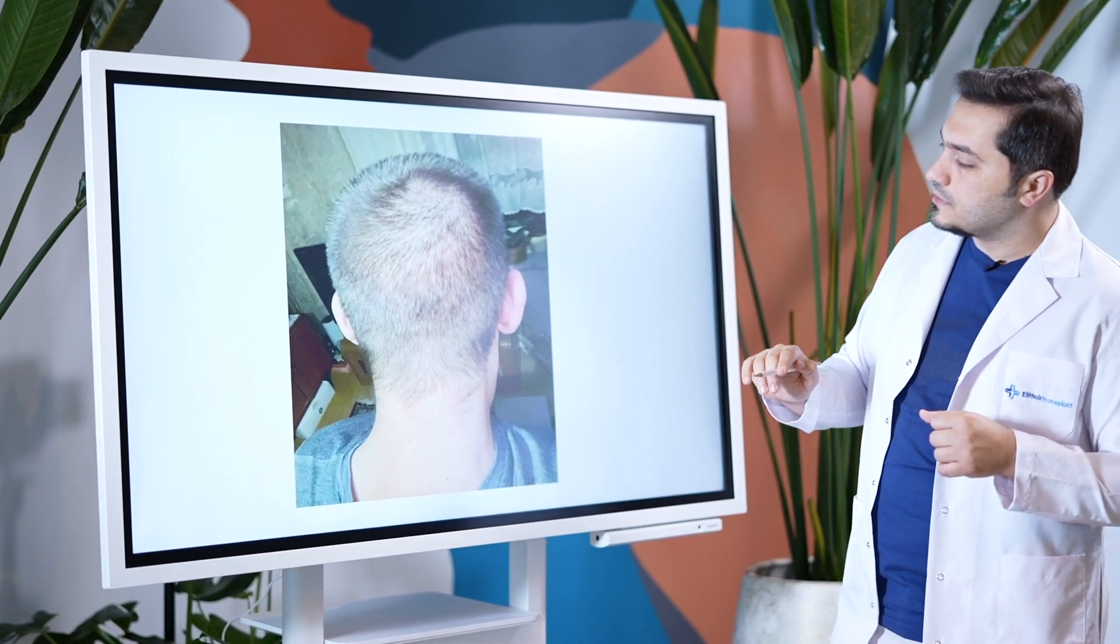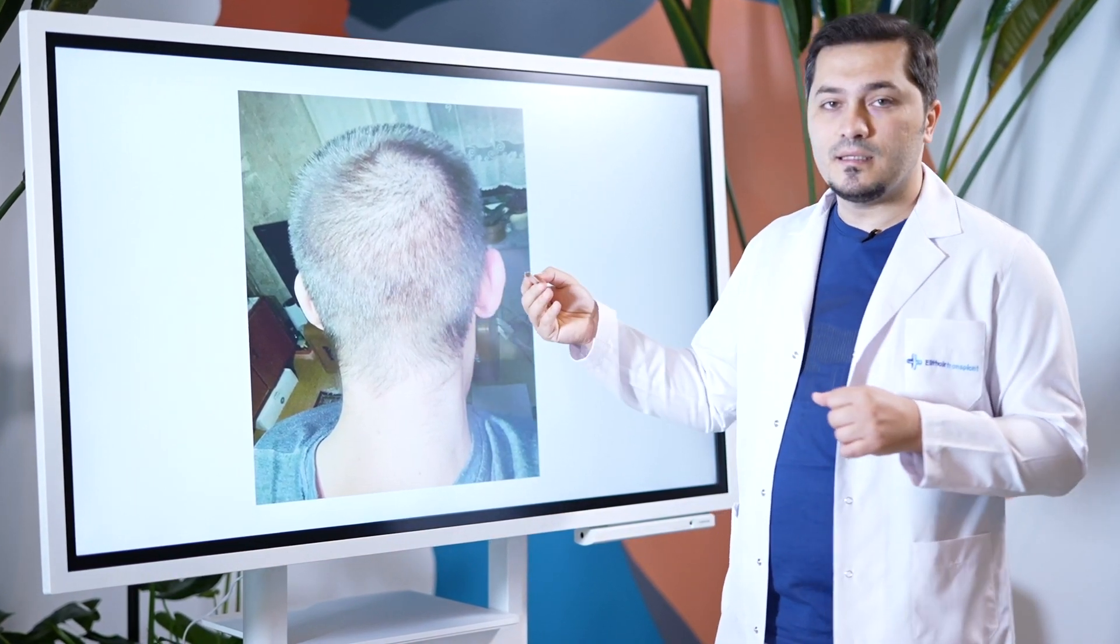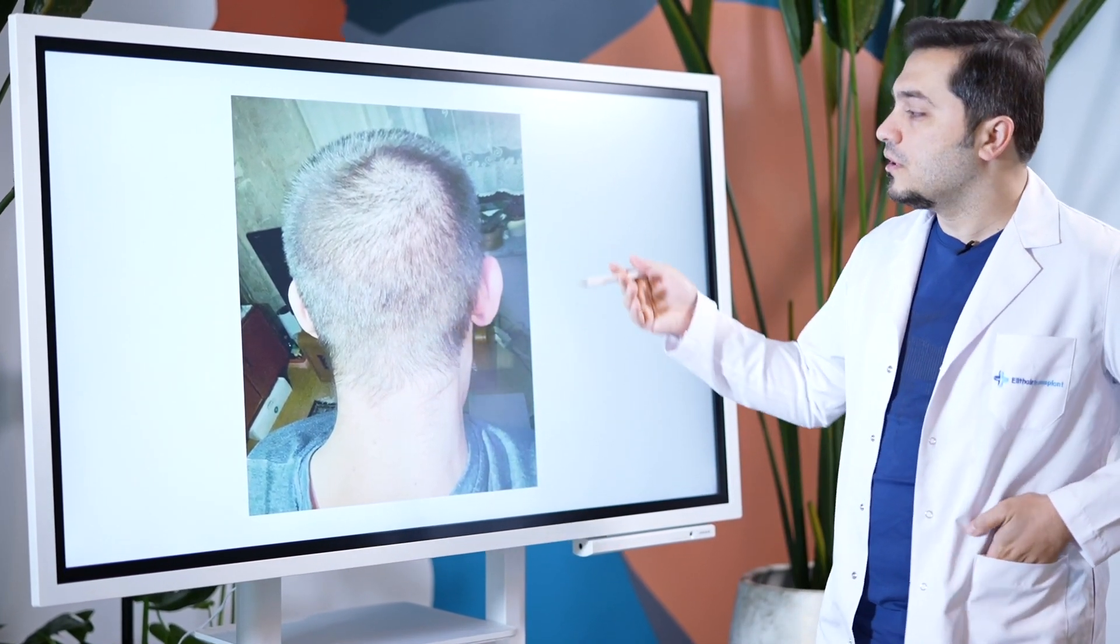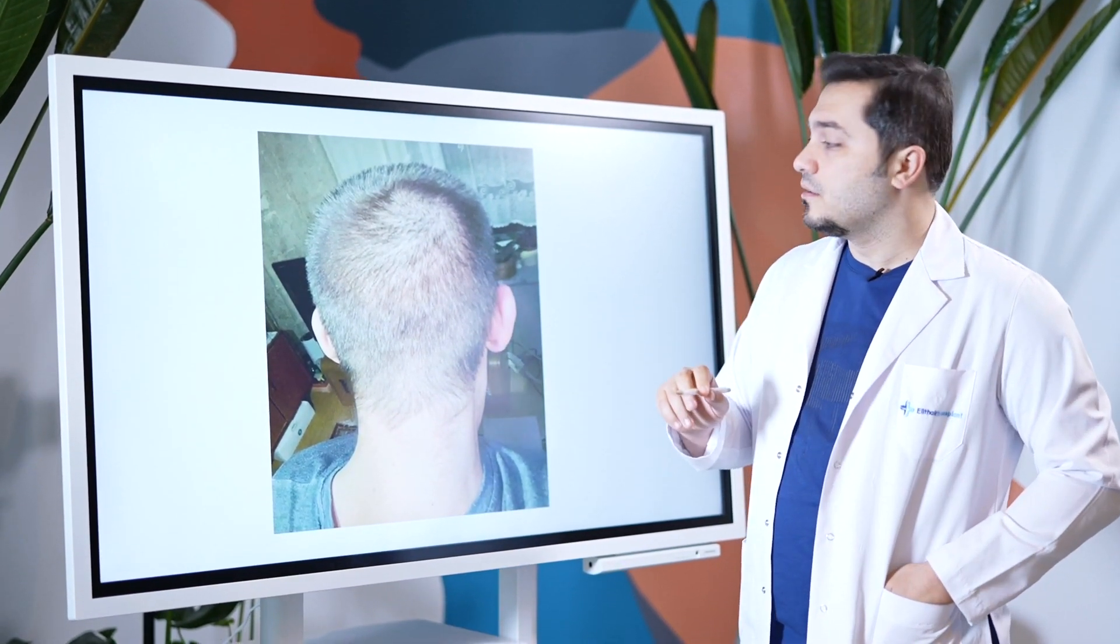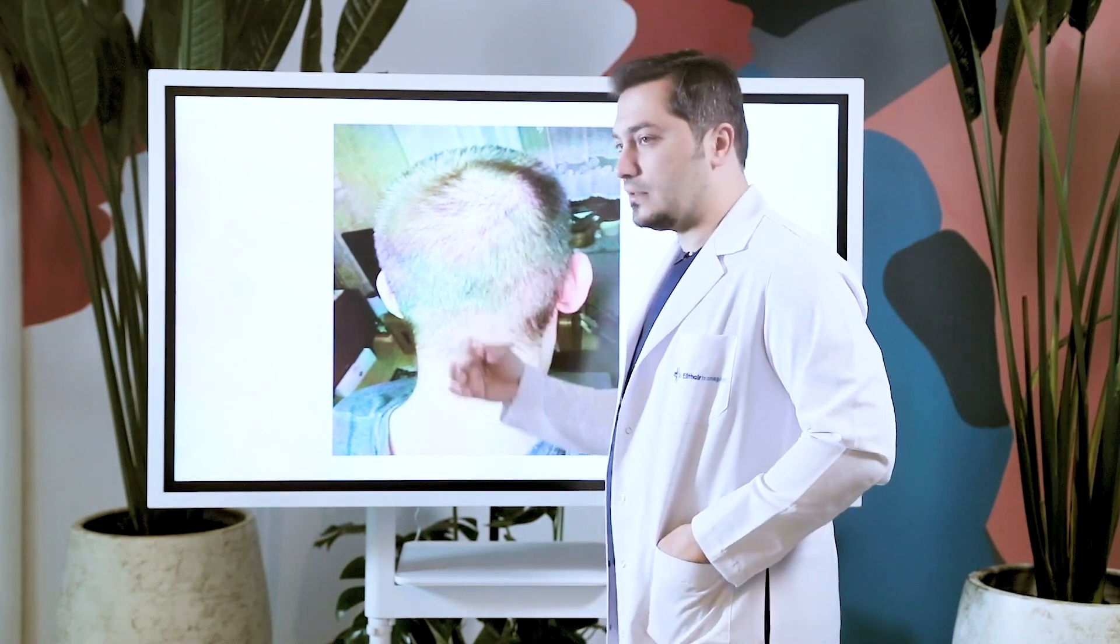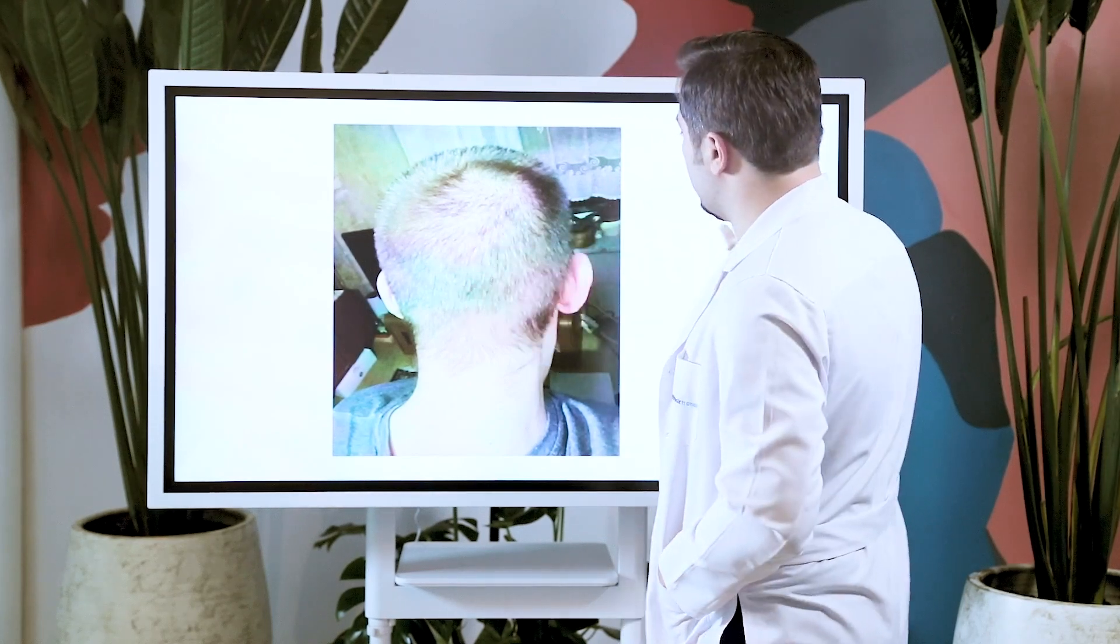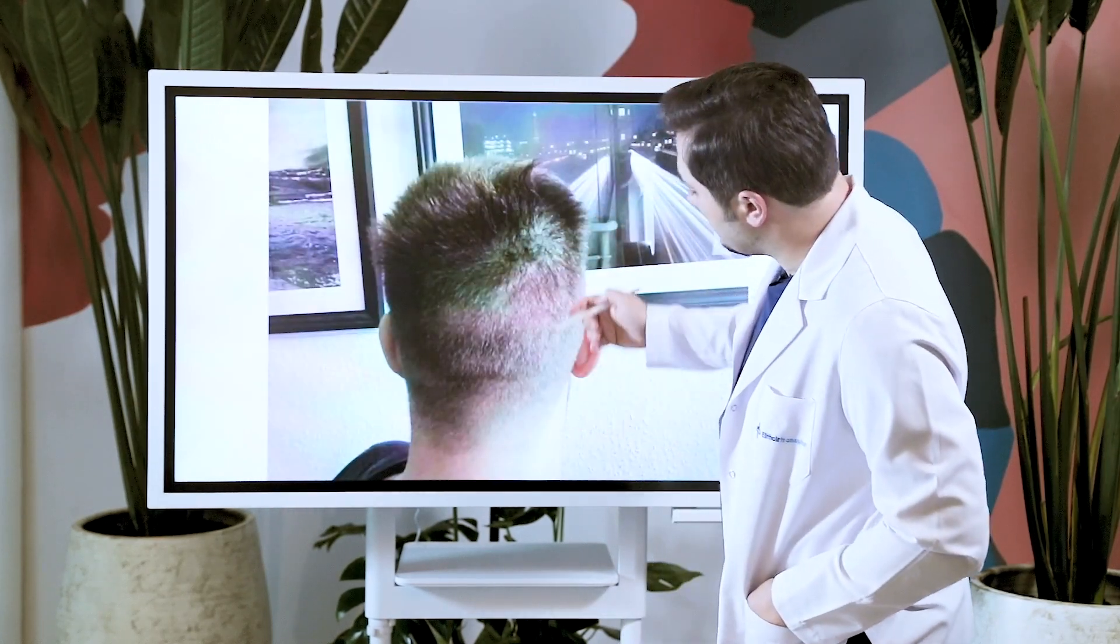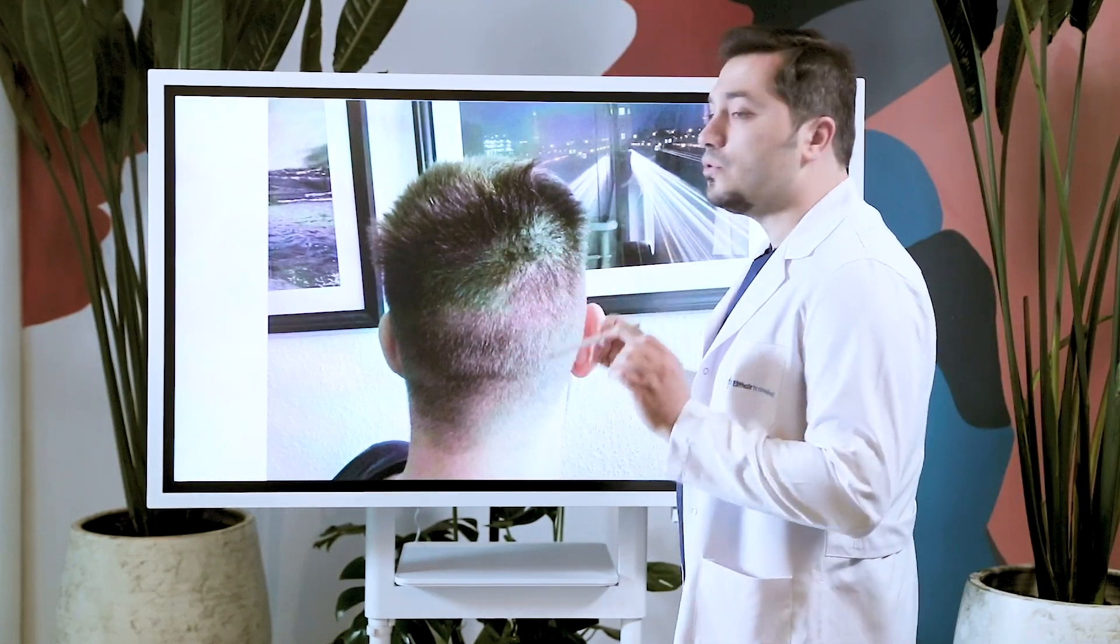As you can see here in the picture of our patient's donor area, there are no visible signs of surgery even though his hair is short. 4,000 grafts were taken from this patient of ours. As you can see, he can wear his hair short or long as he likes. You can see it more clearly here. Notice that our patient has very minimal scarring.